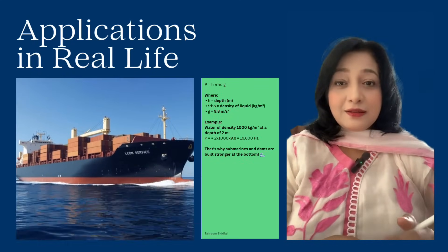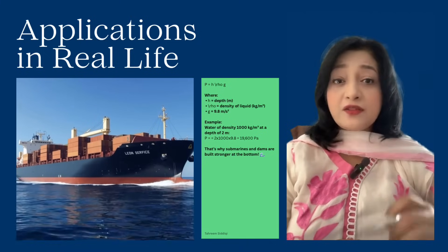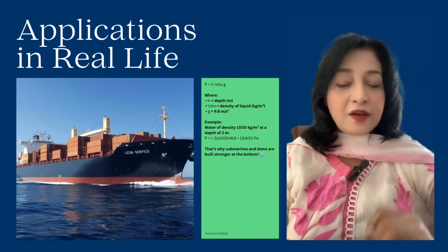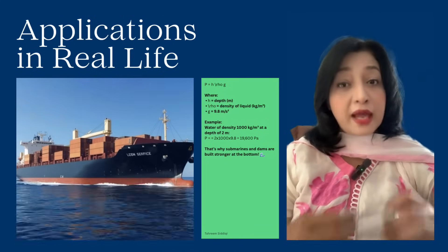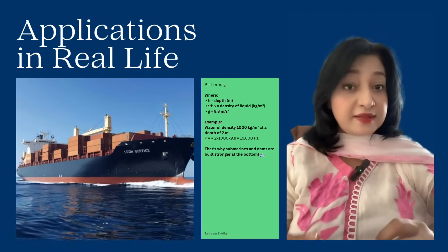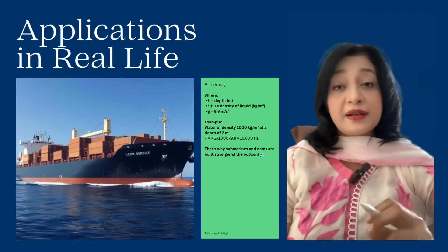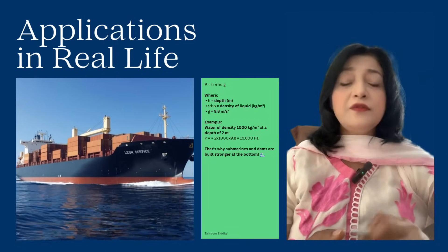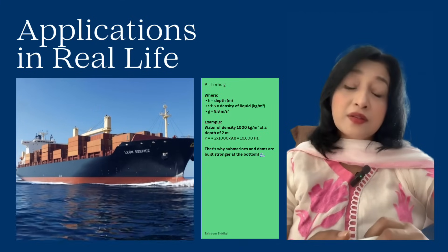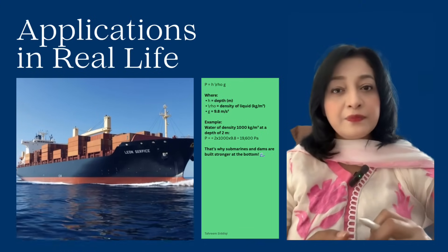Pressure in fluids: liquids or gases exert pressure in all directions, and it increases with depth. The formula is P = hρg, where h is depth, ρ is the density of the liquid in kg/m³, and g = 9.8 m/s². For example, water of density 1000 kg/m³ at a depth of 2 meters gives P = 19,600 pascals. That's why submarines and dams are built stronger at the bottom.